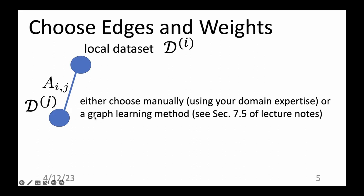The similarities between local models are design choices about how you enforce them. You can either choose manually using your domain expertise — for example, knowing that two nearby Finnish weather stations likely have data with similar statistics, so you place an edge between them — or you can use a graph learning method that you will use in the next coding assignment.